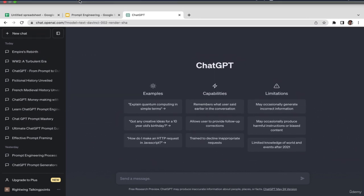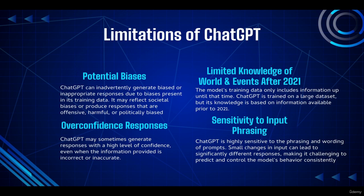In this video we're going to talk about limitations of ChatGPT. ChatGPT is actually pretty new — it was released in 2022, so it's been less than a year. It's definitely not perfect and there are still rooms for improvement. Let's talk about the first limitation: potential biases. ChatGPT can inadvertently generate biased or inappropriate responses due to biases present in its training data, and may reflect societal, harmful, or political biases.